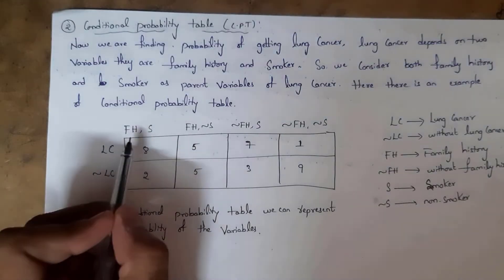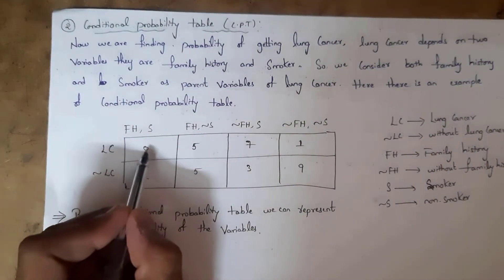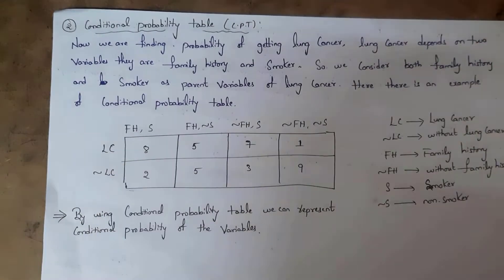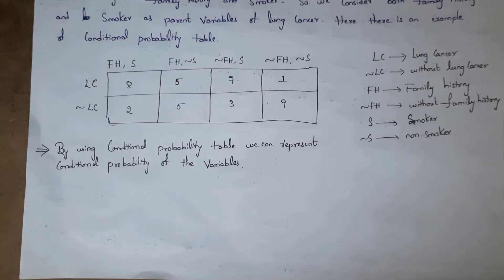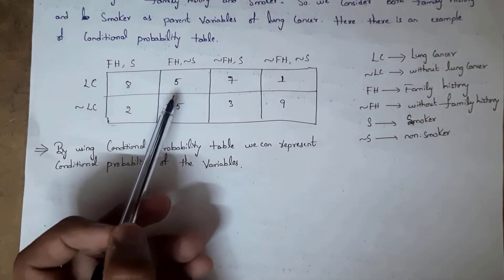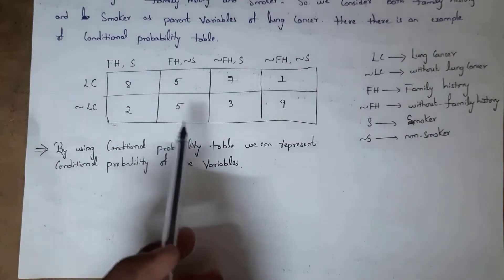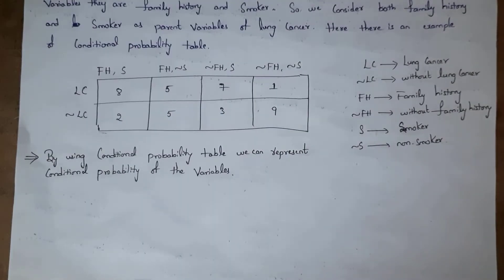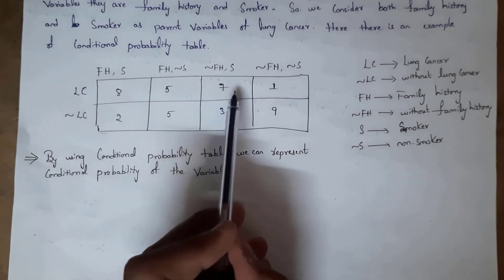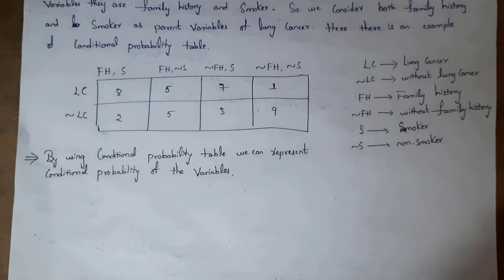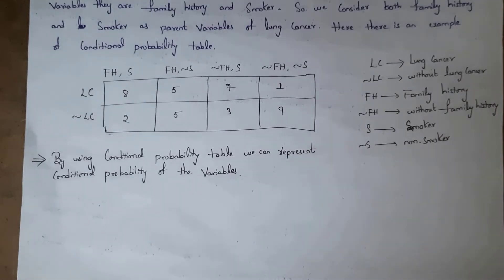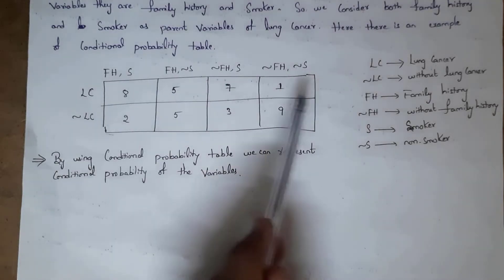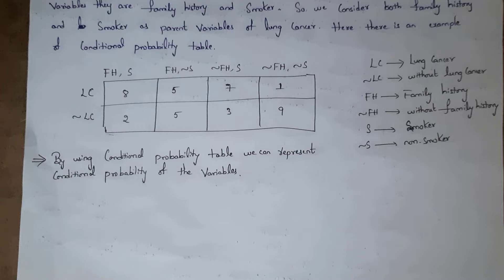If a person has both family history and smoking habit, there is an 80% chance of getting lung cancer and 20% chance of not. With family history but no smoking, it's 50%/50%. With no family history but smoking, it's 70%/30%. With neither family history nor smoking, there is only a 10% chance of getting lung cancer and 90% chance of not. This conditional probability table represents the conditional probability of the variable.